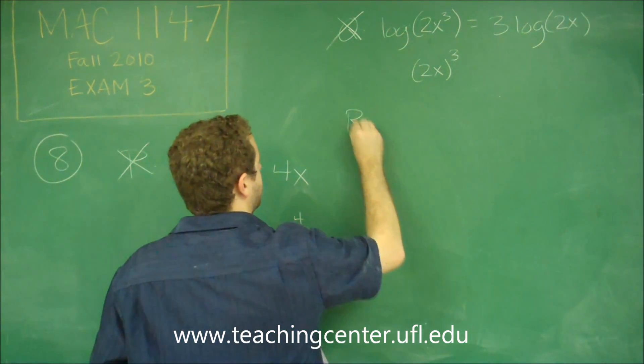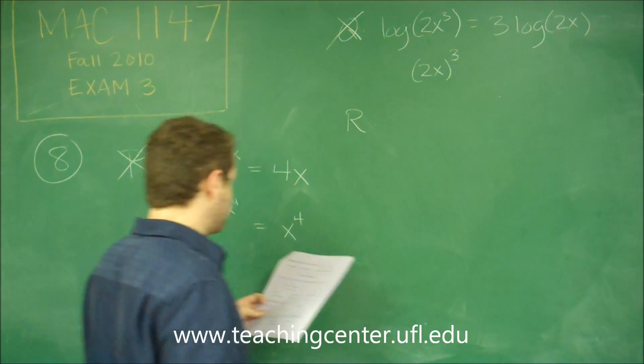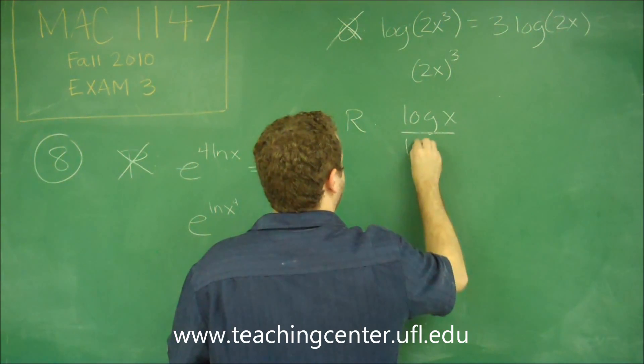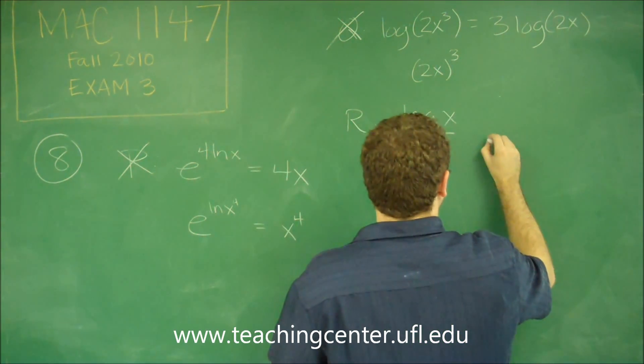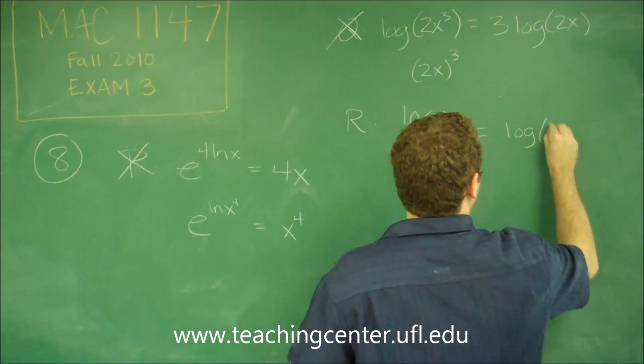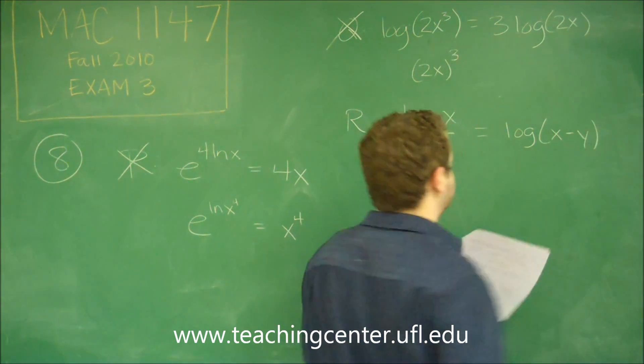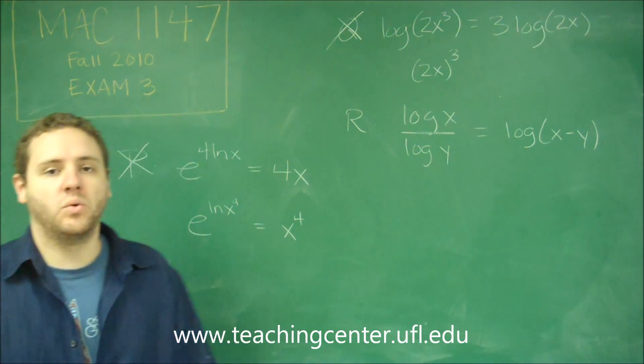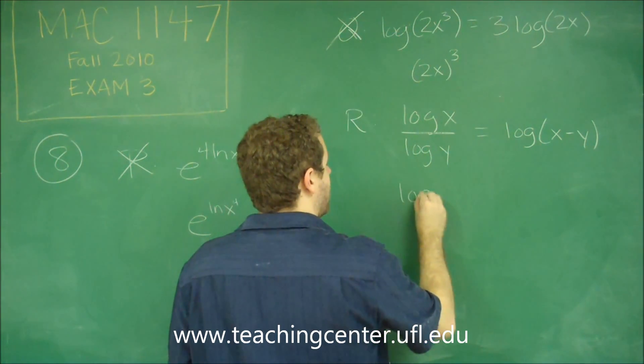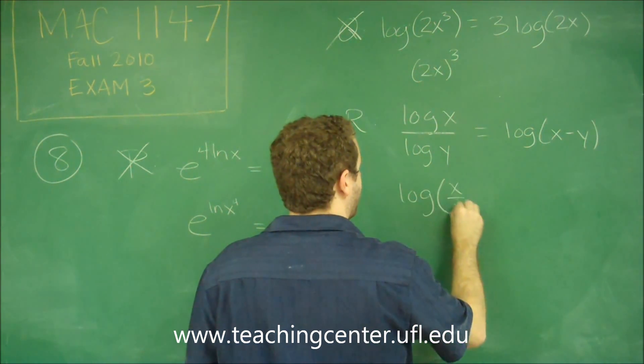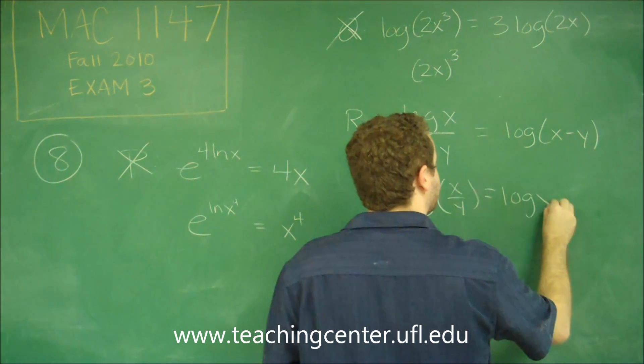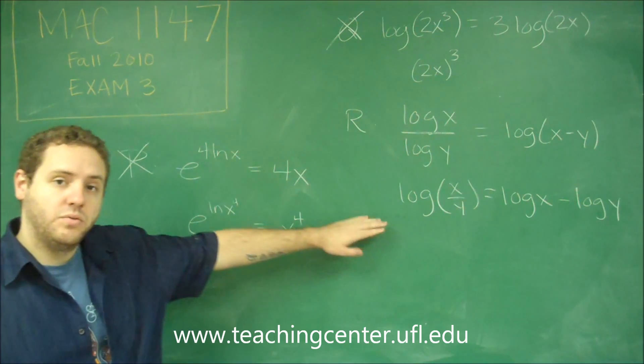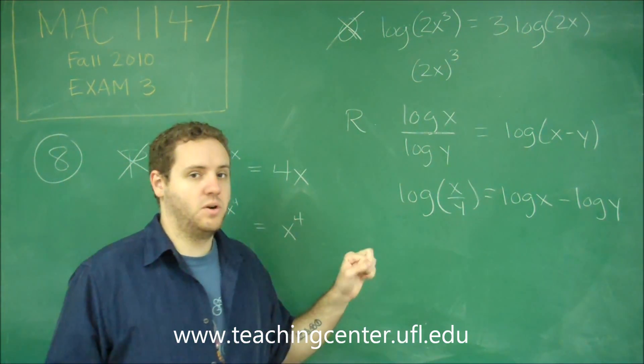Okay, and finally, R. This says that log X over log Y is equal to log of X minus Y. So this looks kind of similar to one of your basic log rules and how to split them up. However, this is done in the wrong order. The right rule here is that the log of X over Y is equal to log X minus log Y. That is the rule that is true that you should have memorized as one of your log rules.